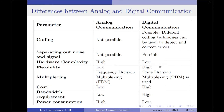Talking about multiplexing, analog communication uses frequency division multiplexing. On the other hand, digital communication uses time division multiplexing. The next parameter is cost. Analog communication systems are of low cost, whereas digital communication systems cost a little high.